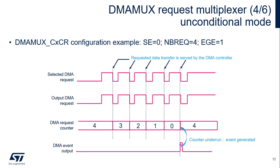When the request multiplexer channel is configured unconditionally (SE equals 0), the DMA request is transmitted as is and as paced by the DMA controller. When the DMA controller is served a data transfer, the DMA request is deasserted and the built-in DMA request counter is decremented. At the counter underrun, if enabled via the EGE field, an event can be generated.